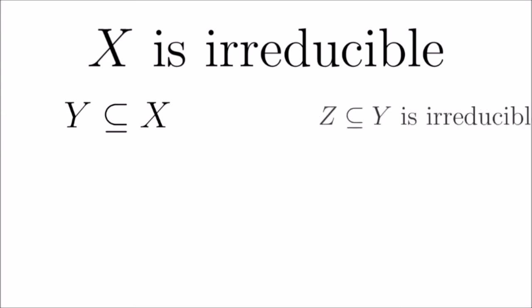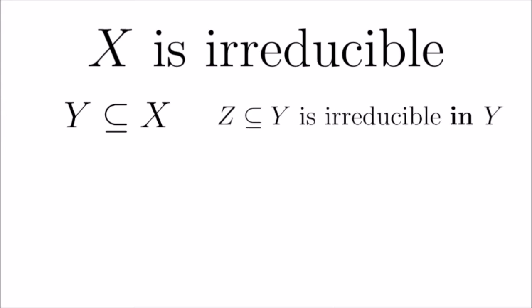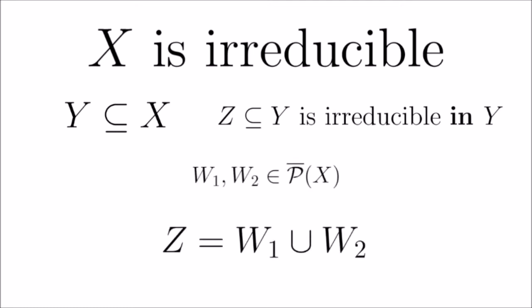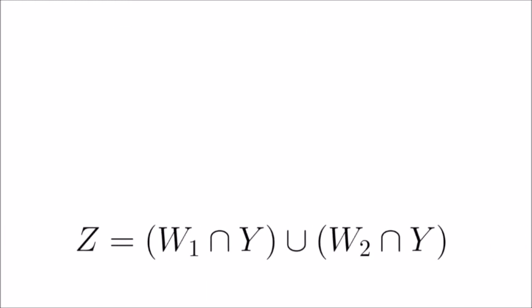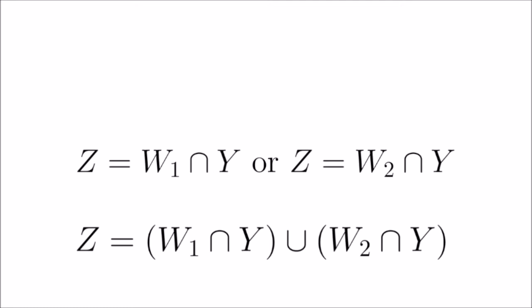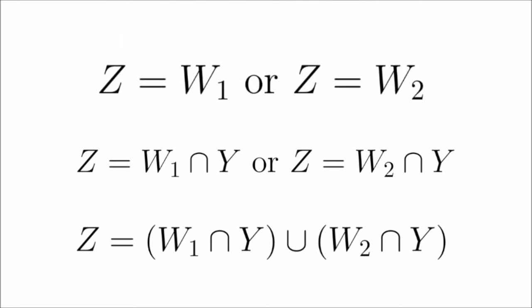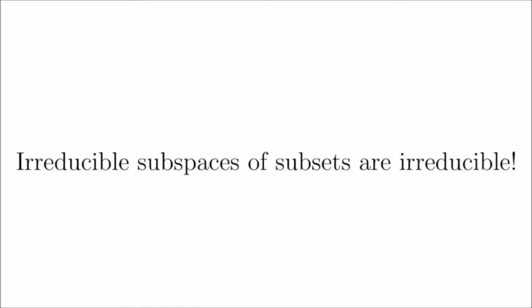Before continuing, a quick topological aside. Let X be irreducible, Y a subset of X, and Z a subset of Y that is irreducible under the subspace topology of Y. If Z equals the union of two sets closed in X, then the intersection of these two sets with Y are closed in Y and equal to Z; by irreducibility of Z it equals one of them, and by containment Z equals one of the original two closed sets. The upshot: irreducible subspaces of subsets are irreducible in the ambient space.